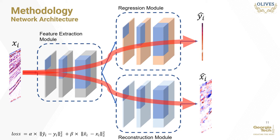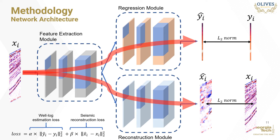The loss function has two components. The first is the L2 norm squared difference between the estimated rock property profile and the ground truth well log. The second is the seismic reconstruction loss — the squared difference between the reconstructed seismic input and the actual seismic input image. The two loss components are weighted by factors alpha and beta to control the relative importance of the two learning tasks. We train using the PyTorch library with the Adam optimizer and gradient descent for 900 epochs.